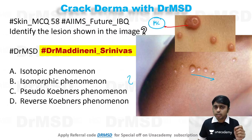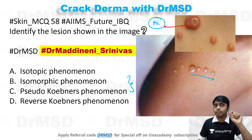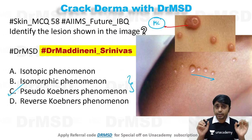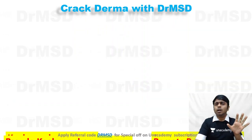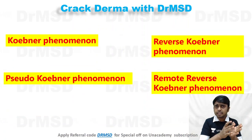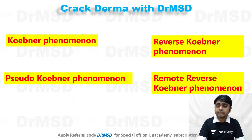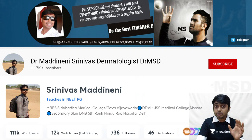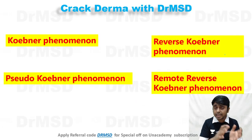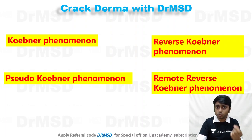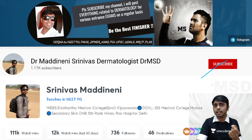I am sure that most of you have narrowed your answer to options B and C. And if you have answered it as pseudo-Koebner phenomenon, that is awesome and you are right. In this video, I will discuss and explain all four phenomena and the examples in which they are seen. If you are not yet subscribed to my YouTube channel, do subscribe and watch this video till the end so that you will understand each and every point in detail.